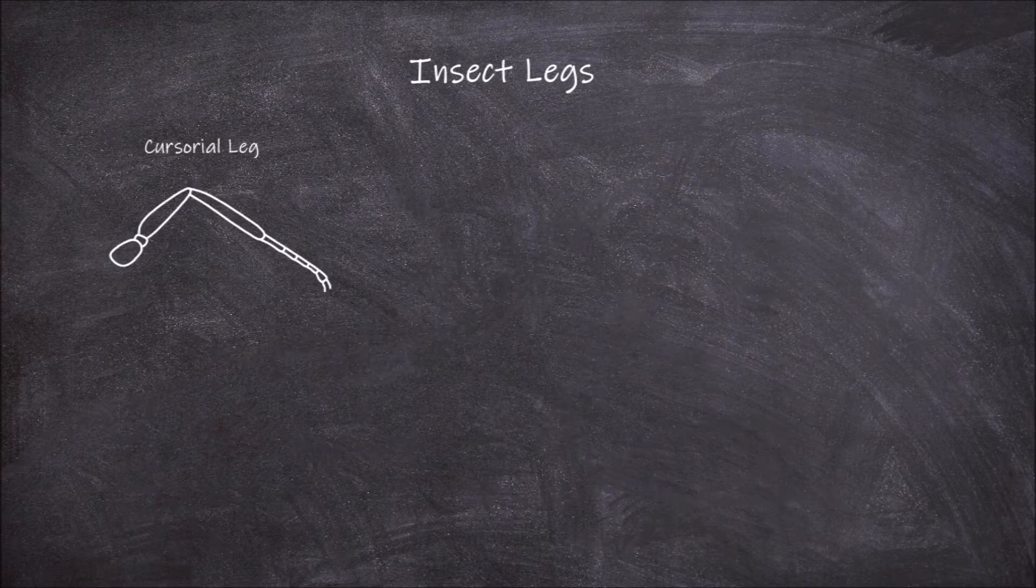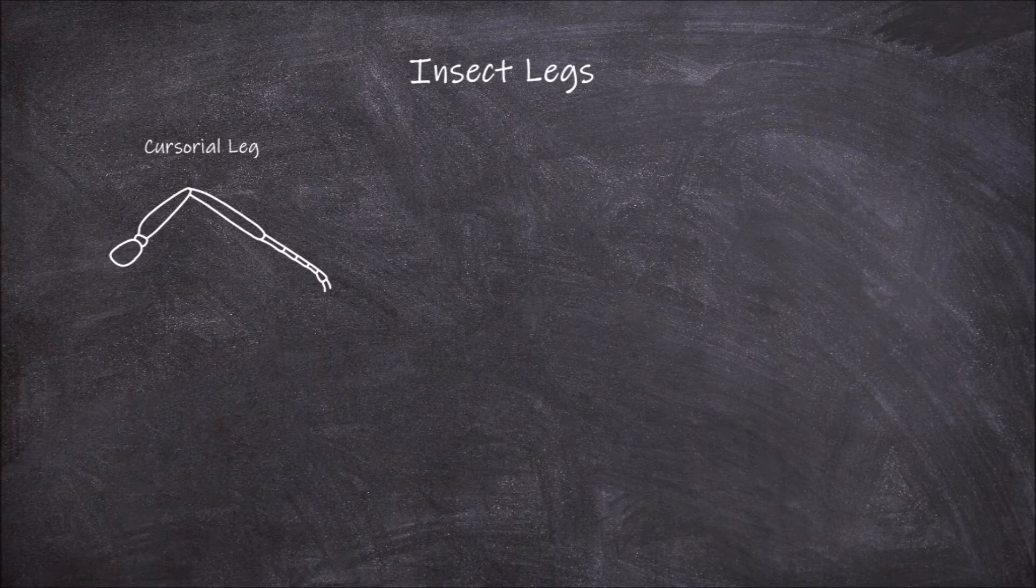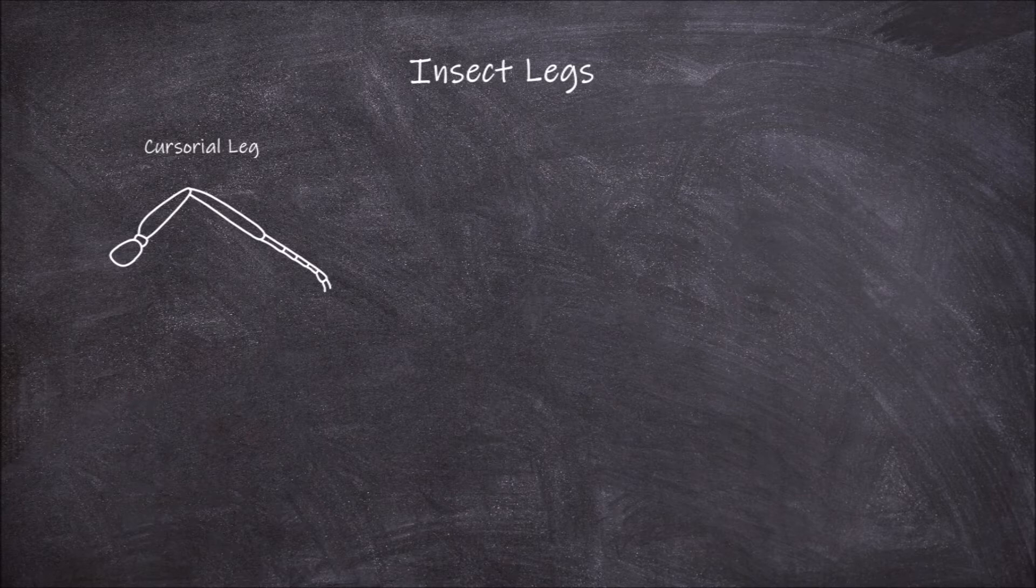The first type of leg is the cursorial leg. Cursorial legs are slender and function in walking or running. An example of insects that have this type of leg are members of the cockroaches.